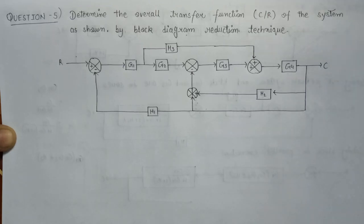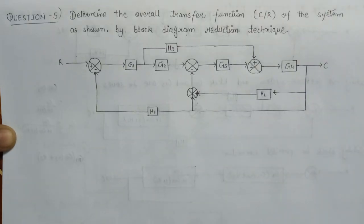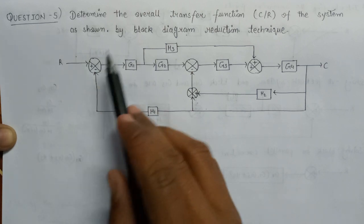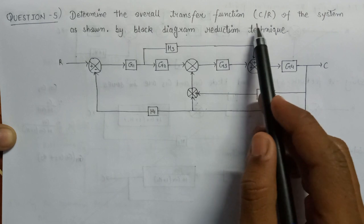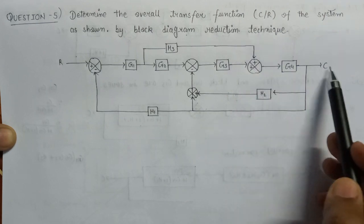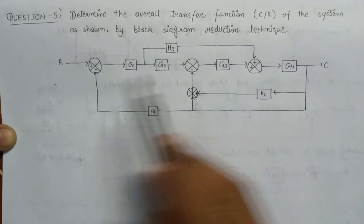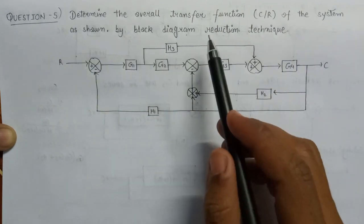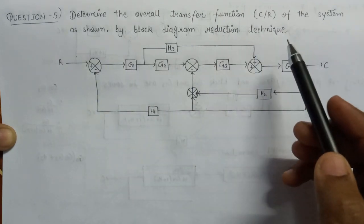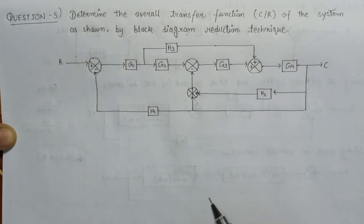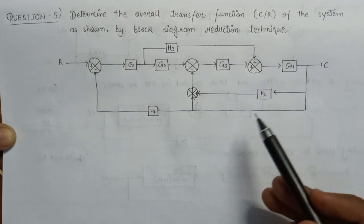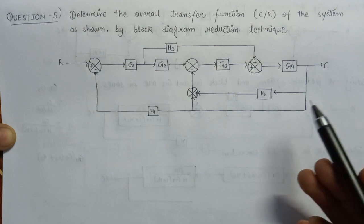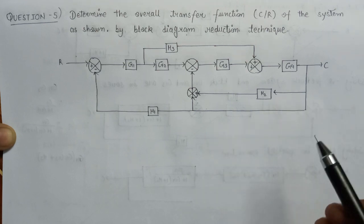Welcome. In this lecture we are going to solve a question based on block diagram reduction technique to determine the overall transfer function — that is the ratio of C over R, the output to input ratio — of a system using block diagram reduction technique.